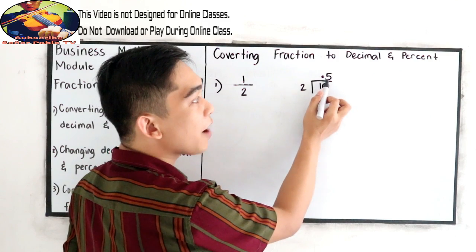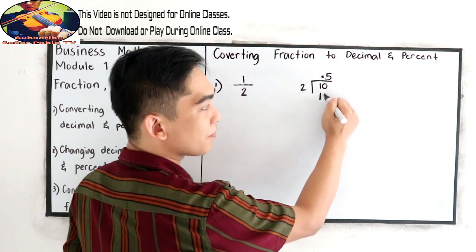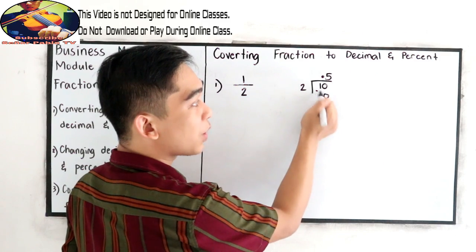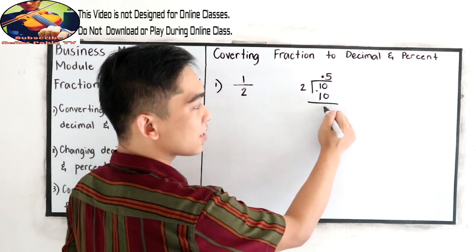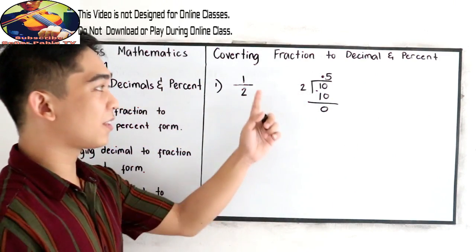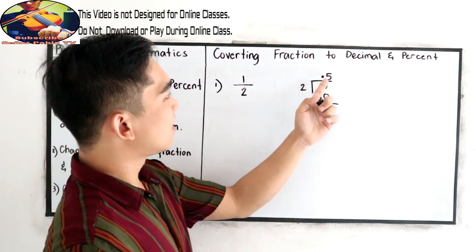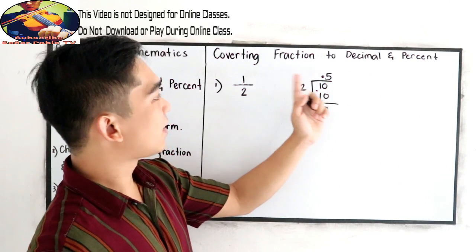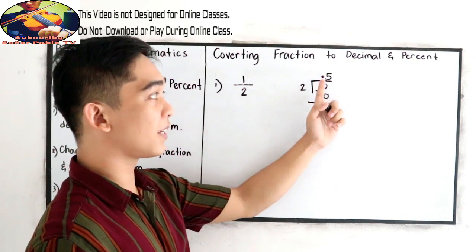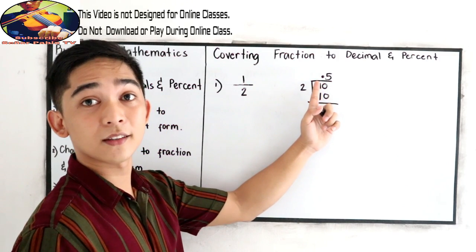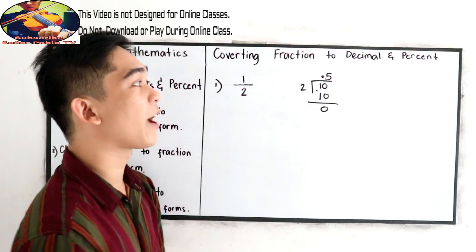Now, 5 times 2 is 10. We subtract: 10 minus 10 equals 0. So the decimal equivalent of 1/2 is 0.5.